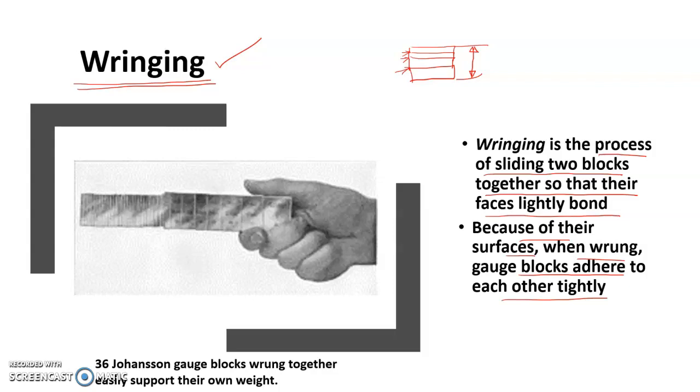Next is ringing. Ringing is the most important technique associated with gauge blocks. Ringing is defined as the process of sliding two blocks together so that their faces lightly bond.